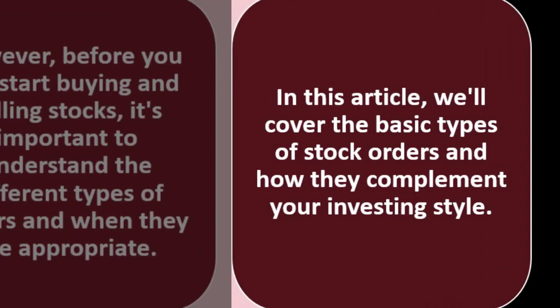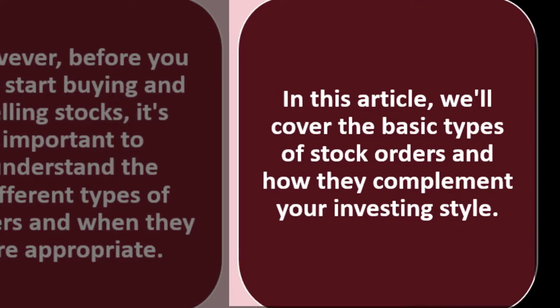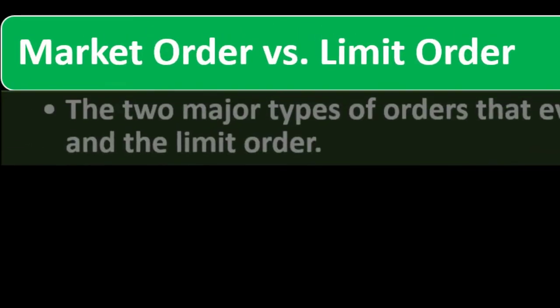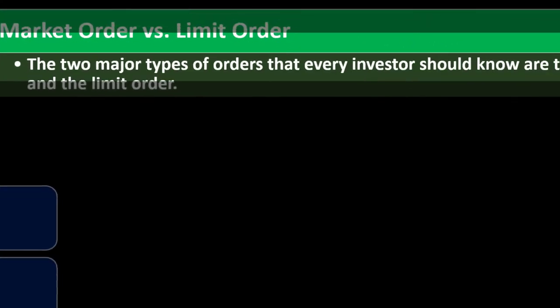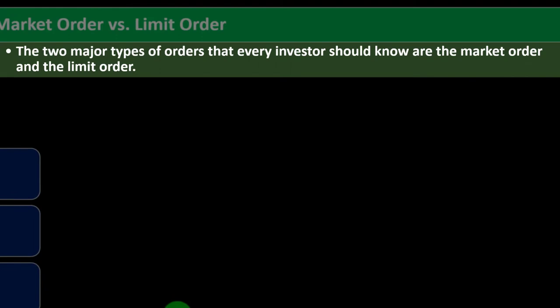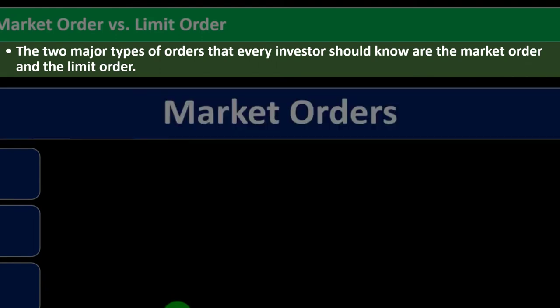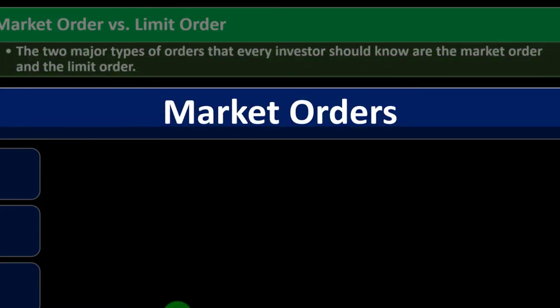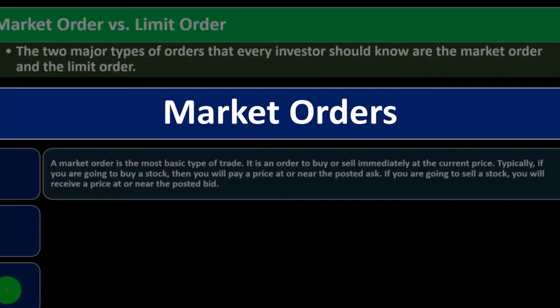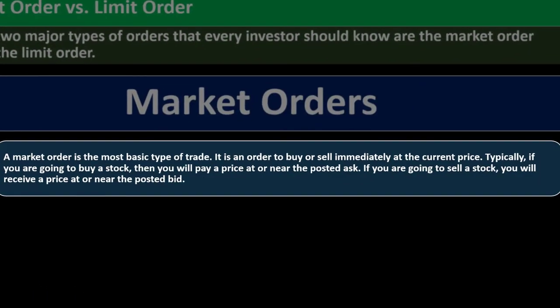This covers the basic types of stock orders and how they complement your investing style. The two major types of orders that every investor should know are the market order and the limit order. A market order is the most basic type of trade — it is an order to buy or sell immediately at the current price.